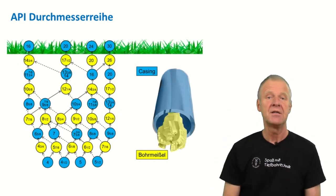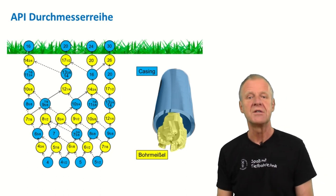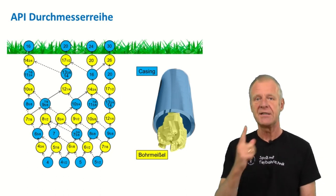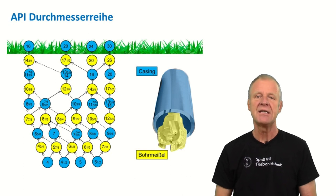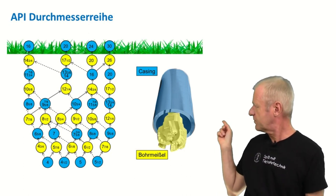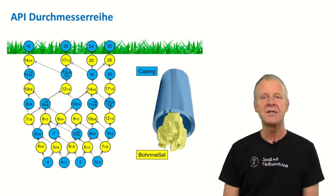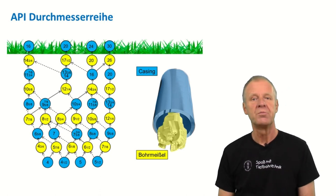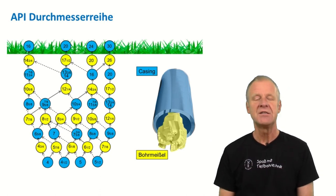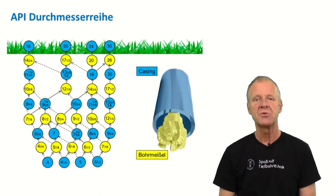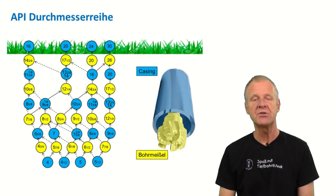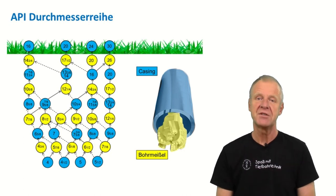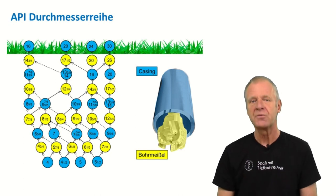The picture here behind me shows the API diameter series. Of course, we drill from the surface down to the reservoir, but the planning is actually done from the bottom up — therefore, the arrows are drawn from the bottom upwards. We start at the bottom at a certain diameter for the production casing and move along the lines to the top. If we move upwards along the solid lines, the API standard tells us there is enough annular space between the casings and the borehole walls for a proper cementing job. If you look closely, there are also a few parts with dotted lines, which you can also move upwards — but if you move along these lines, the annular spaces will be quite narrow, and you have to be very careful when cementing and thoroughly check the quality of the cementing job afterwards.